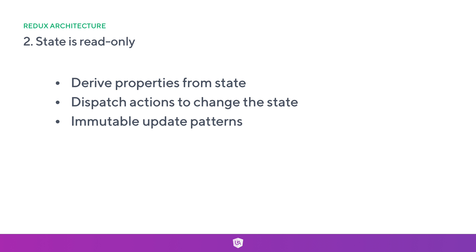When we want to change the state, we actually dispatch something called an action. This is just a simple function where we instruct the store to call a function, which will then in turn update the state based on the code we've provided. The way we update the state is using an immutable update pattern. You may have seen this using things like array.map, which is a good example of an immutable operation because it returns a new array instead of mutating an existing one. We'll also cover code examples about the difference between mutable and immutable update patterns in the next couple of videos.